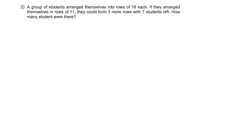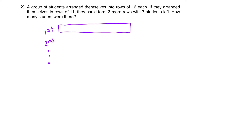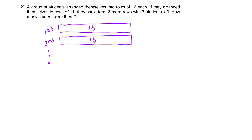Let me draw out what they are trying to say. Initially, there's the first row, the second row, and so on. Each row has 16 people. The pattern continues until the very last row. How many rows are there? That is also what we are trying to find out.